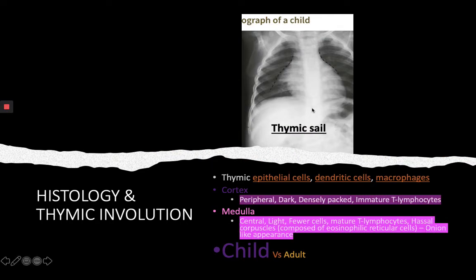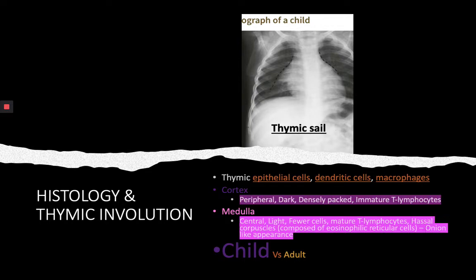Here is a chest X-ray of a child, and this triangular opacity which extends from the mediastinum to the right upper thorax is actually the thymus. This sign is called the thymic sail sign, and it's a physiological finding in a chest X-ray of a child, but in an adult X-ray you cannot see this.